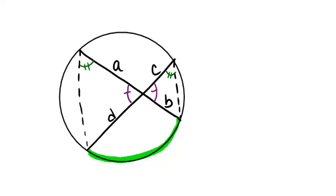So by angle-angle, these two triangles have to be similar because they have two pairs of angles that are congruent.